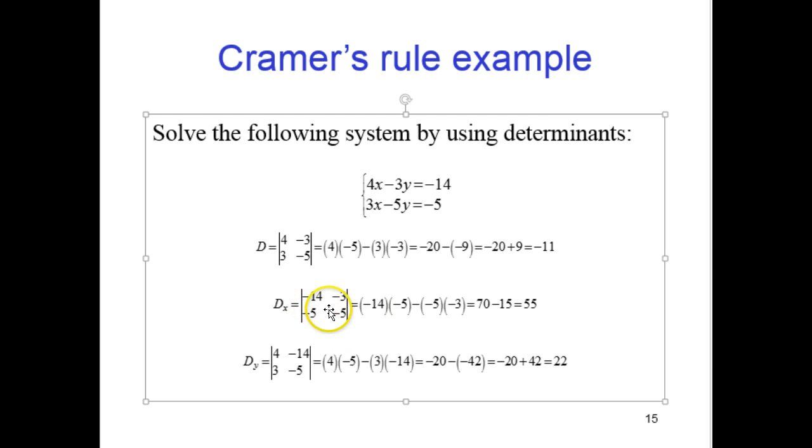So we go negative 14 times negative 5 minus the product of these two, the product of negative 5 and negative 3. So that becomes 70 minus 15, which is 55.